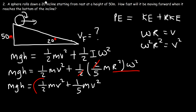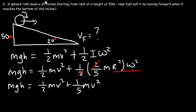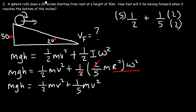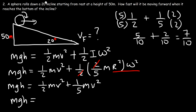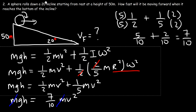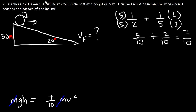Next we need to combine the fractions one half plus one fifth. To add these two fractions we need common denominators. Multiplying to get tenths gives us five-tenths plus two-tenths, which is seven-tenths. So mgh is equal to seven-tenths times mv squared. Dividing both sides by mass, gh equals seven-tenths times v squared.